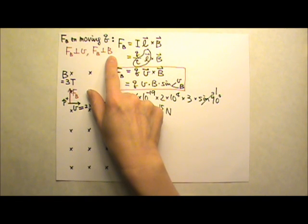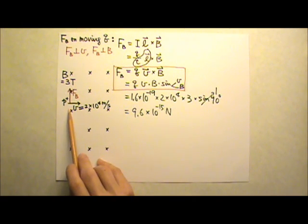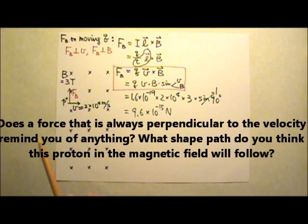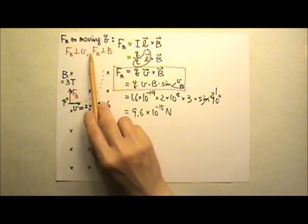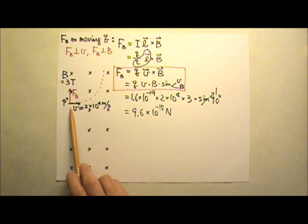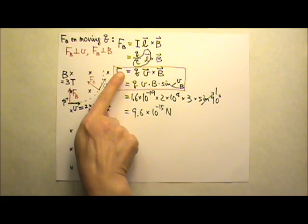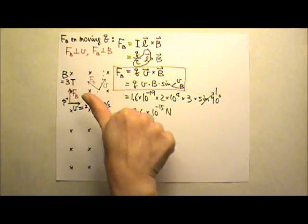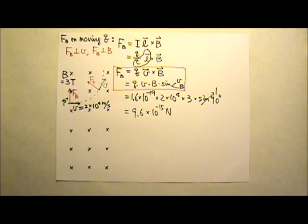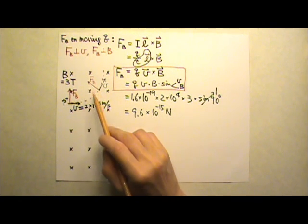Since the force is always perpendicular to the velocity, this is like uniform circular motion. The proton will follow a circular path in the magnetic field: the velocity is tangent to the circle, and the perpendicular magnetic force provides the centripetal force toward the center. Because the magnetic force has no component in the tangential direction, it cannot provide tangential acceleration to change the speed of the proton.